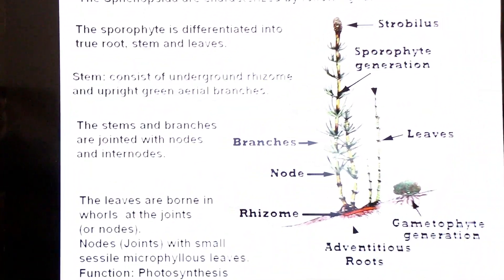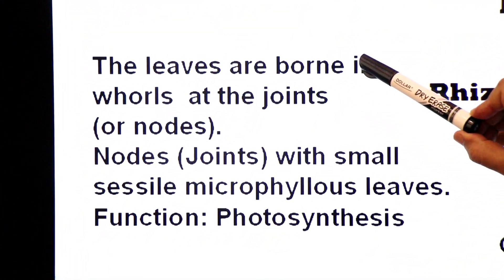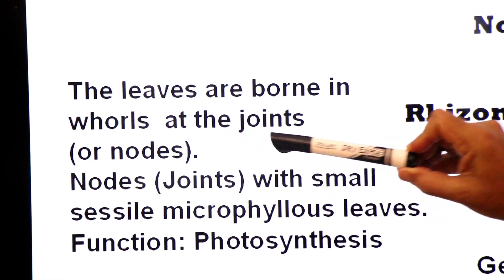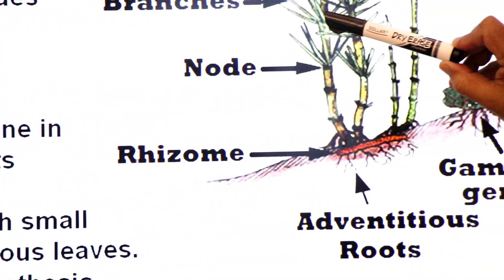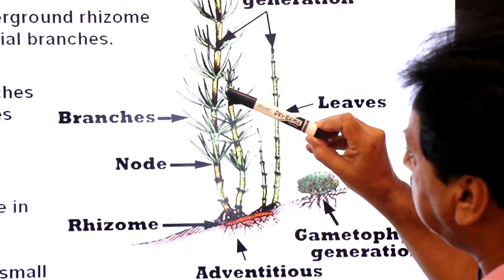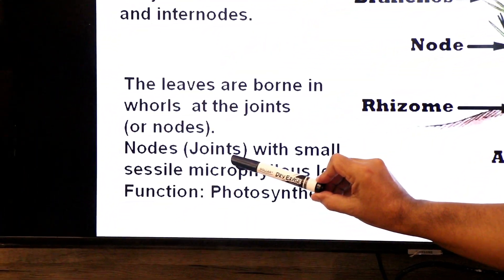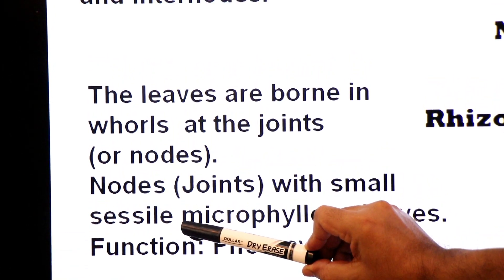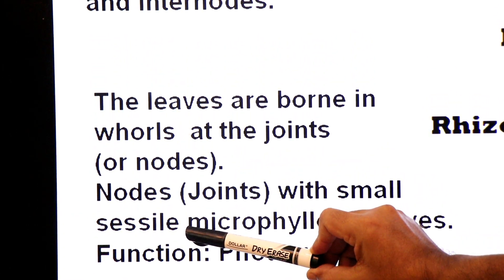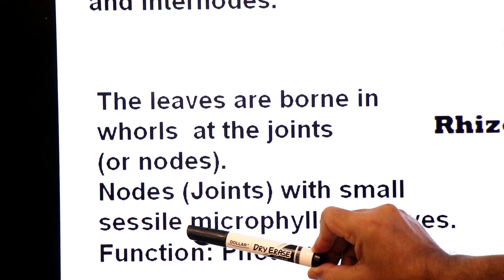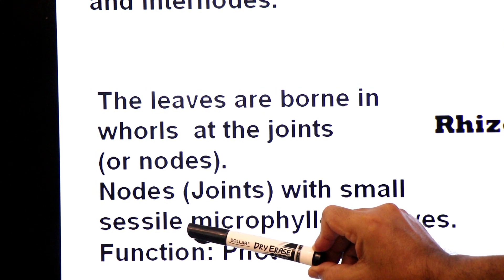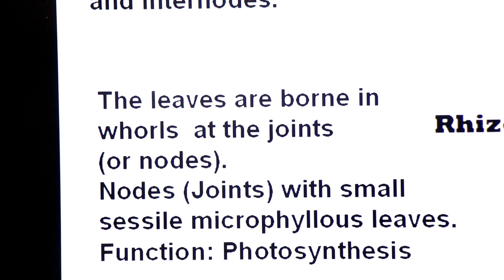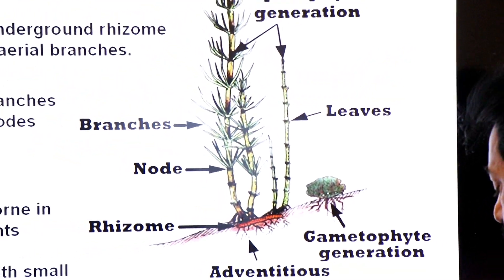The leaves found in Equisetum are microphylls. The leaves are borne in whorls or rings at the joints or nodes. The leaves are sessile — sessile means leaves in which the stalk is absent, so they are directly attached to the stem of the plant. These are microphyllous leaves with a single vein. The function of these leaves is photosynthesis.